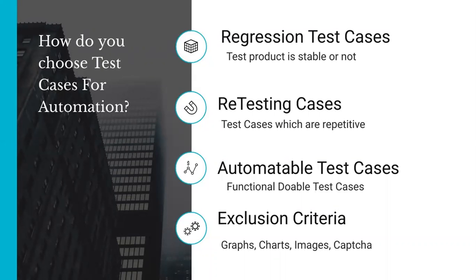The first question is about the criteria — how do you choose test cases which are eligible for automation. The very first criteria is to go for regression test cases, then retesting cases — cases from which you can find whether the product is stable or not. You should target them first for automation. Then the test cases that are repetitive, you should target them. These are the cases which are eligible for automation.